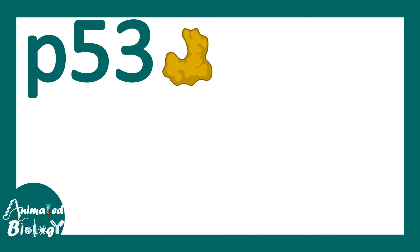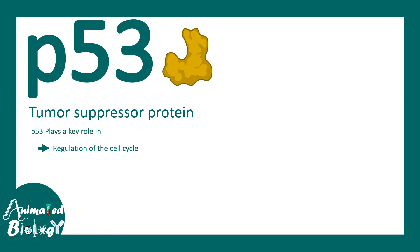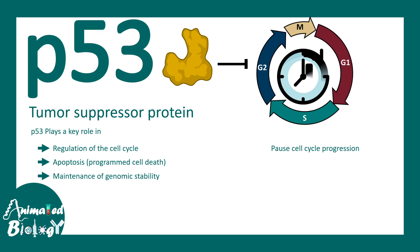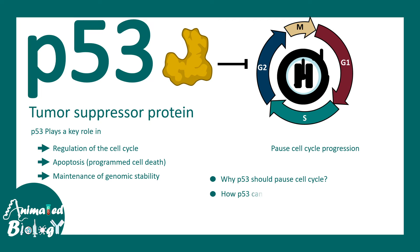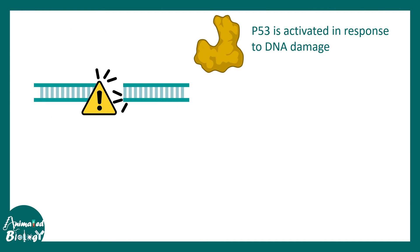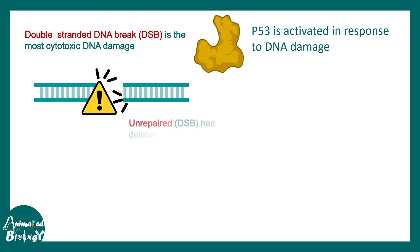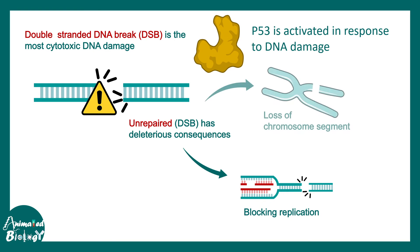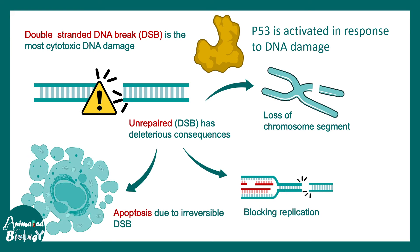Another tumor suppressor that modulates cyclins and regulates the cell cycle is P53. It plays a key role in cell cycle regulation, apoptosis, and maintenance of genomic stability, and can pause cell cycle progression. For example, if DNA damage occurs during G1 phase and is not repaired, there could be detrimental consequences such as replication fork blockage, loss of a chromosome segment, or even cell death. P53 can modulate cyclins to prevent the cell cycle from progressing until damage is addressed.